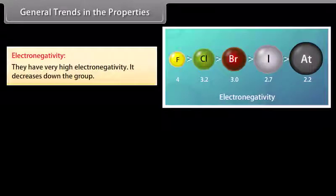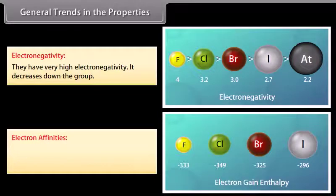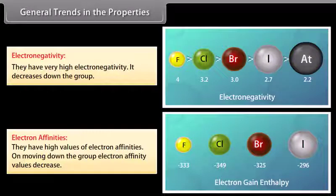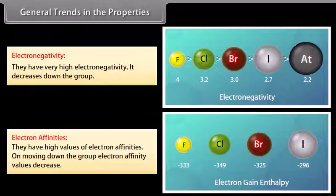Electronegativity: Halogens have very high electronegativity, which decreases down the group. Fluorine is the most electronegative element in the periodic table. Electron affinities: Halogens have high values of electron affinities; on moving down the group, electron affinity values decrease because the size of the atom increases. A low value of electron affinity for fluorine is due to its small size — in a compact 2p subshell, the added electron does not feel much attraction.